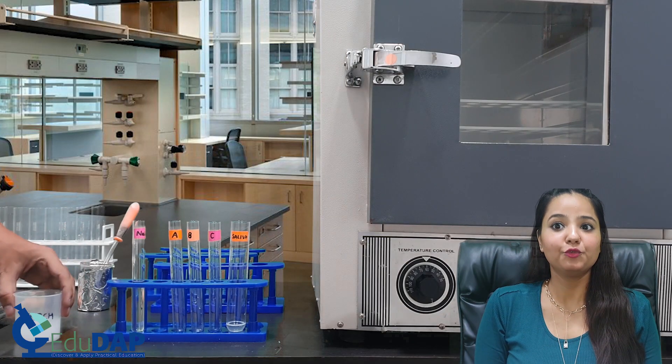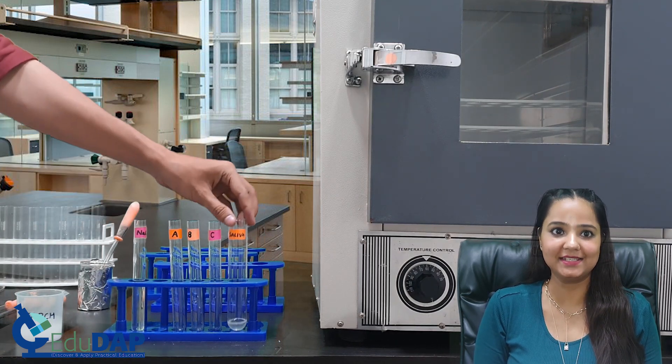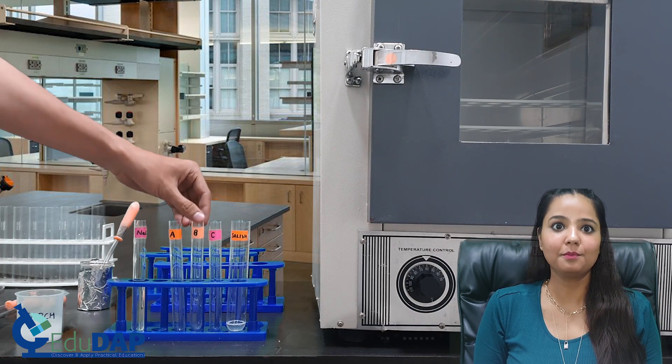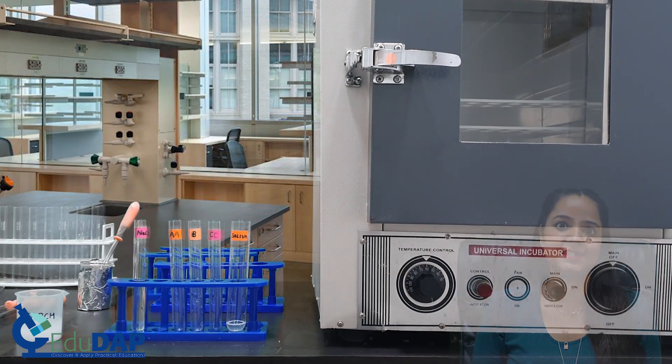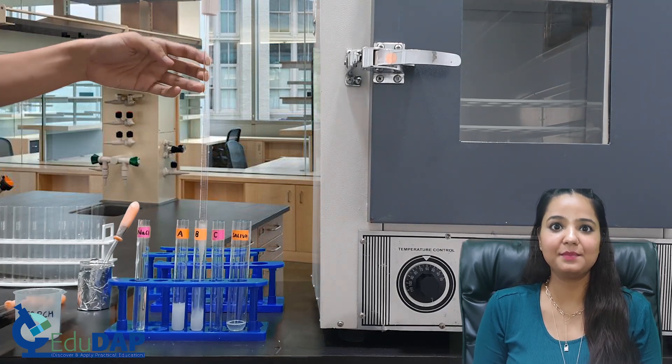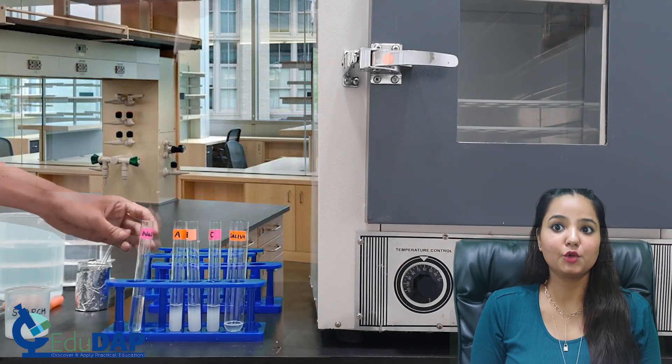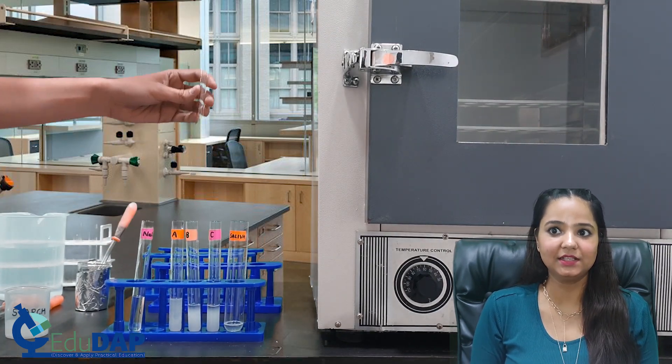Here, we have 1% starch, 1% NaCl, saliva, and three test tubes marked A, B, and C. Pour 5 ml of starch into A, B, and C. Now transfer 1 ml of NaCl into the test tubes.